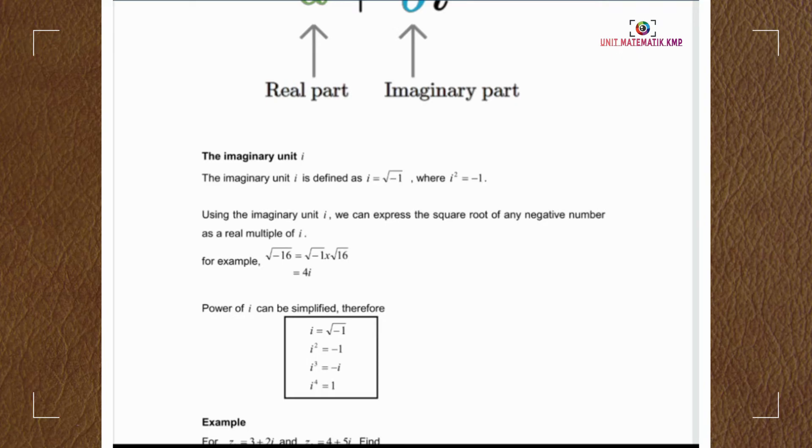Power of i can be simplified. Therefore, i equals the square root of negative 1. i squared, we have negative 1.